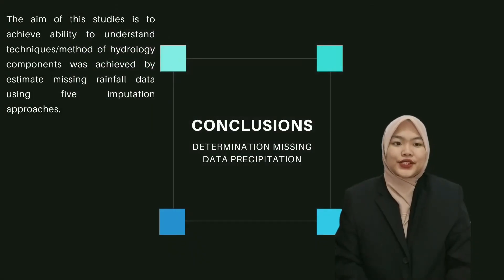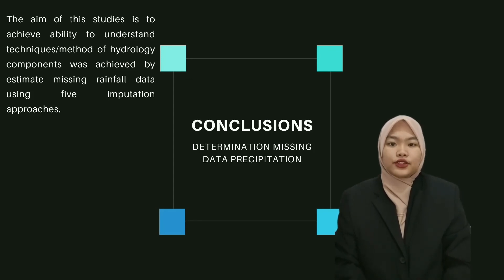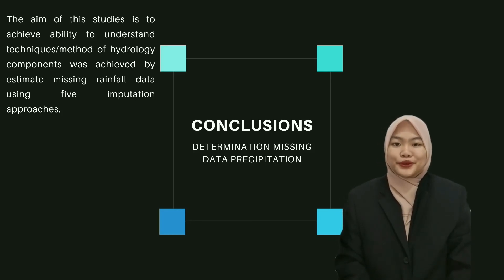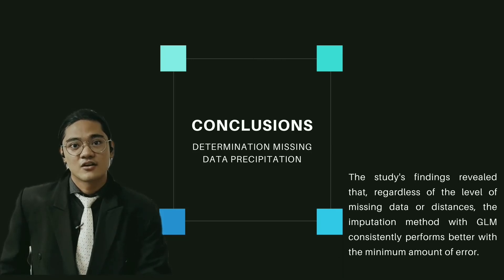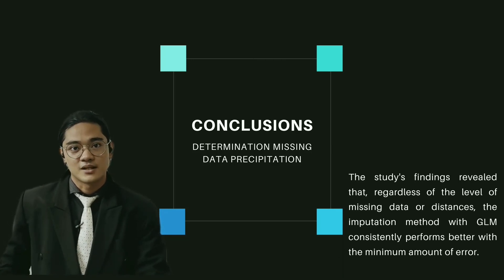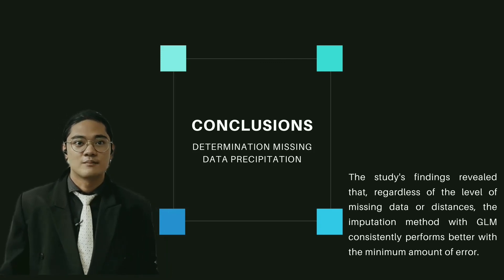The aim of these studies — to achieve the ability to understand techniques or methods of hydrology components — was achieved by estimating missing rainfall data using five imputation approaches. The studies finally revealed that, regardless of the level of missing data or distance, the imputation method with GLM consistently performs better with the minimum amount of error.